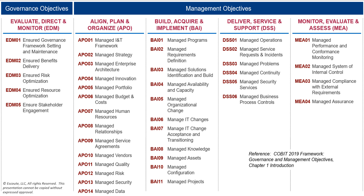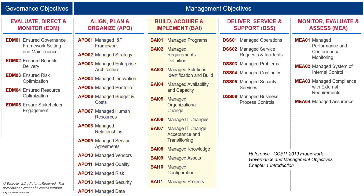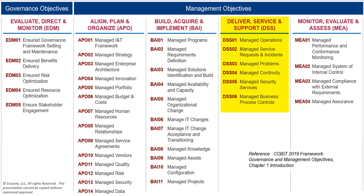I will not go through the details of each objective here — that's the subject of many other videos in this series. On the left-hand side is our governance domain. There is a distinction between governance and management. The governance domain, EDM, includes five governance objectives: EDM01 through EDM05. In the management domains: APO has APO01 through APO14; BAI has BAI01 through BAI11; DSS has DSS01 through DSS06; and MEA has MEA01 through MEA04. You'll find more information in the Objectives Guide.